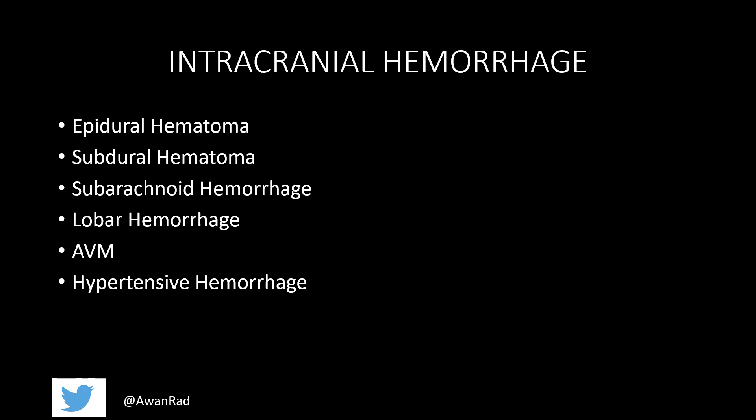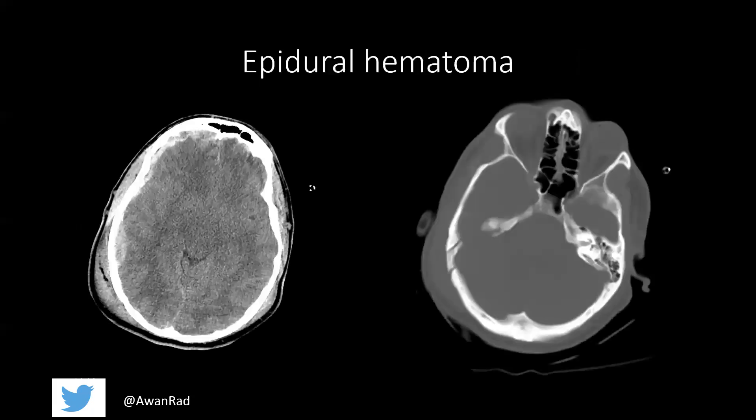By far, you are most likely to see these six types of hemorrhages on the USMLE exam: the epidural hematoma, subdural hematoma, subarachnoid hemorrhage, lobar hemorrhage, AVM, and hypertensive hemorrhage. We'll go through these in concert.